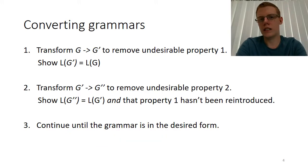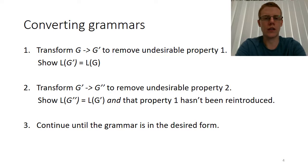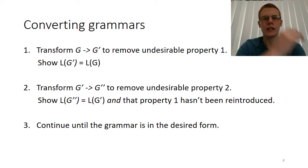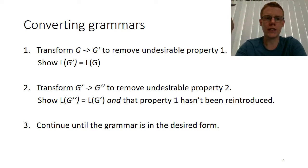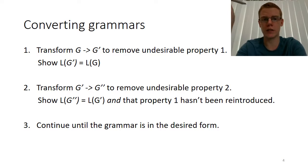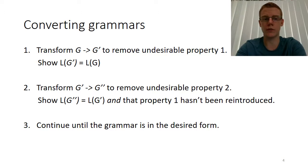The idea behind this conversion is that we will list all of the possible productions into four properties, then show how we can remove each of these properties and end up with a grammar that still generates the same language but doesn't have any of those unwanted properties — thus converting to Chomsky normal form.